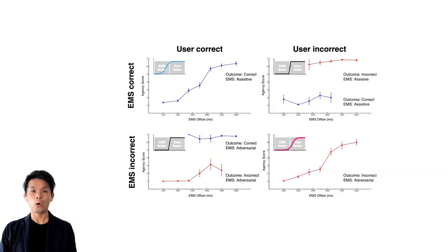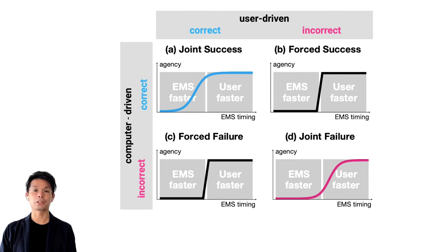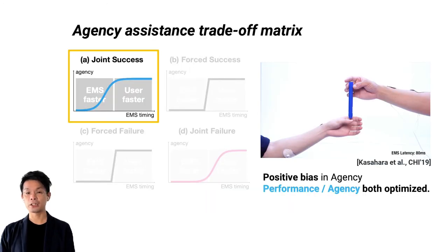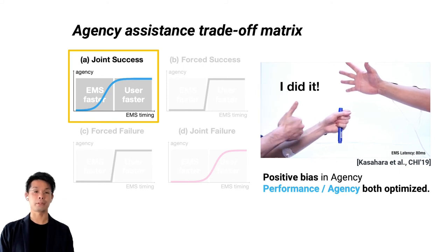Based on our results, we can construct a quadrant for design space of the human-computer integration touch. Let's investigate each quadrant. Here, this is the most desirable situation in integration. It can be seen as a joint success. Where the user and computer are doing correct action, in this situation, the performance being faster and the agency can be both optimized together. Which means the muscle stimulation can accelerate in reaction time, yet preserving sense of agency.